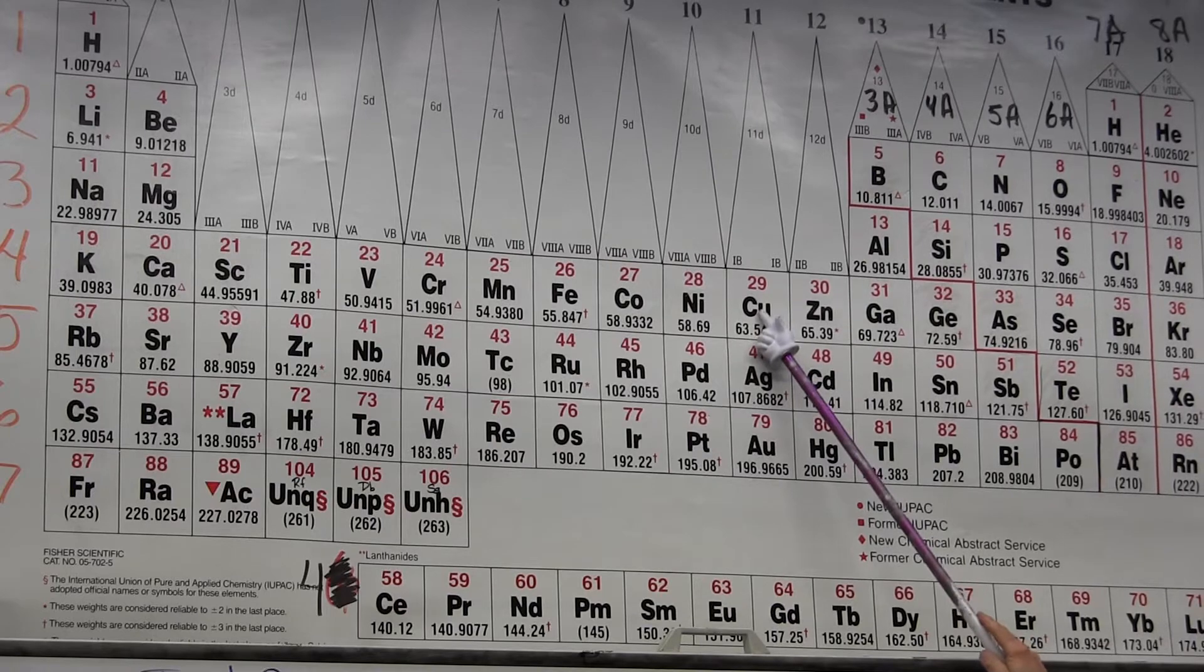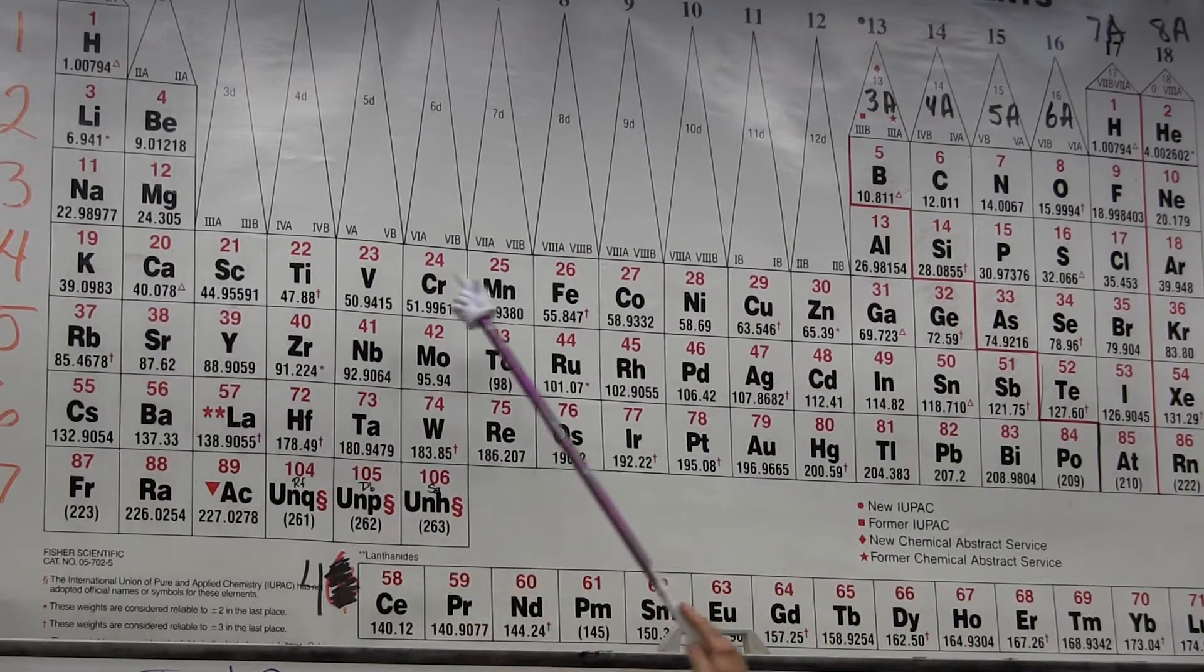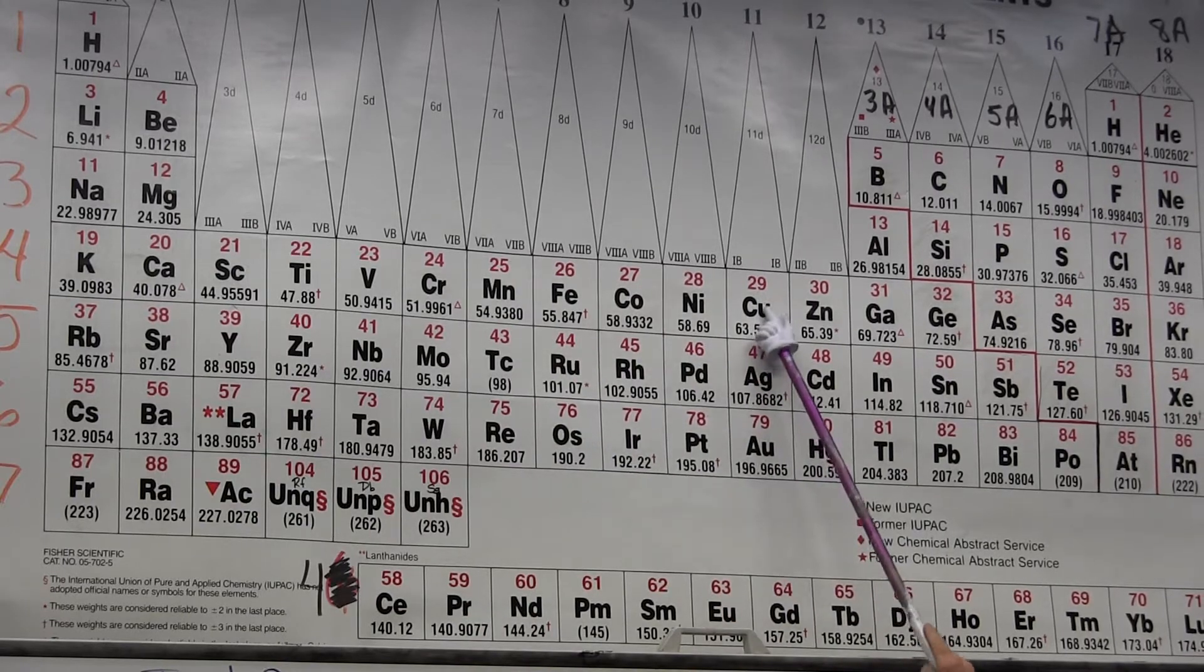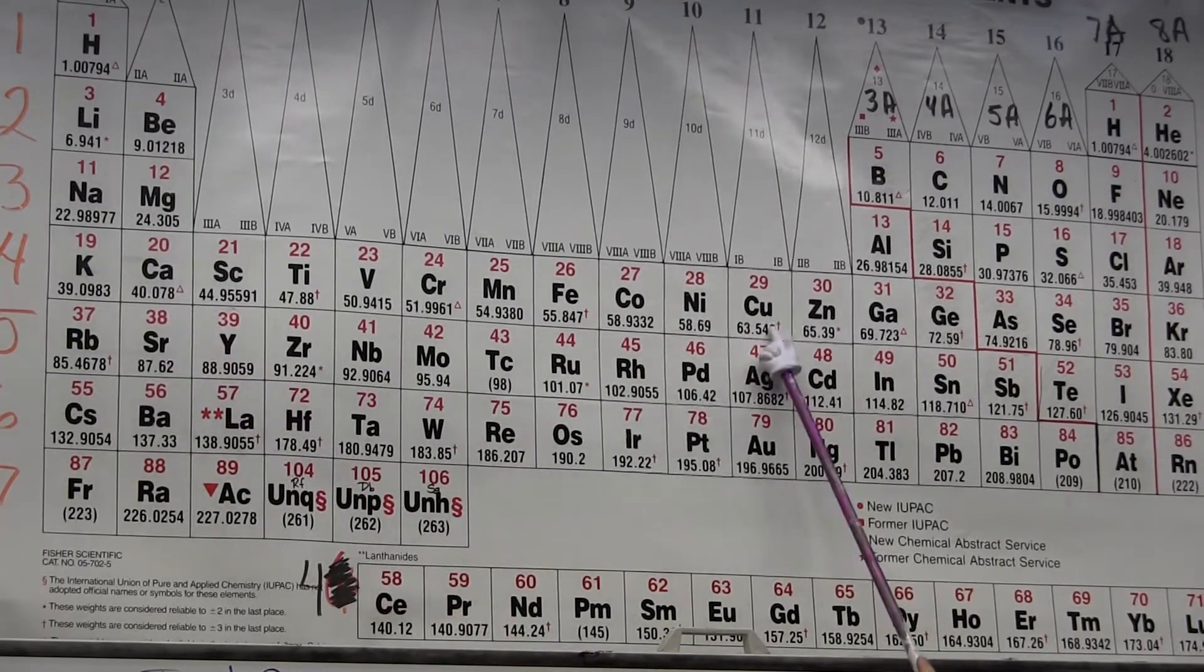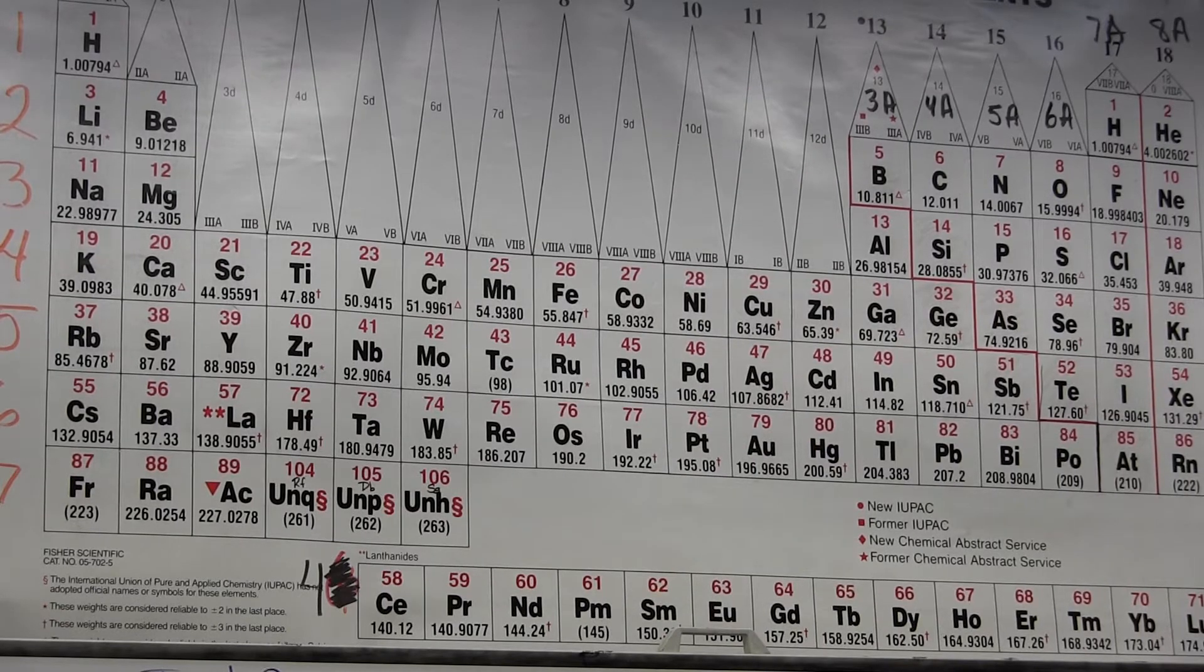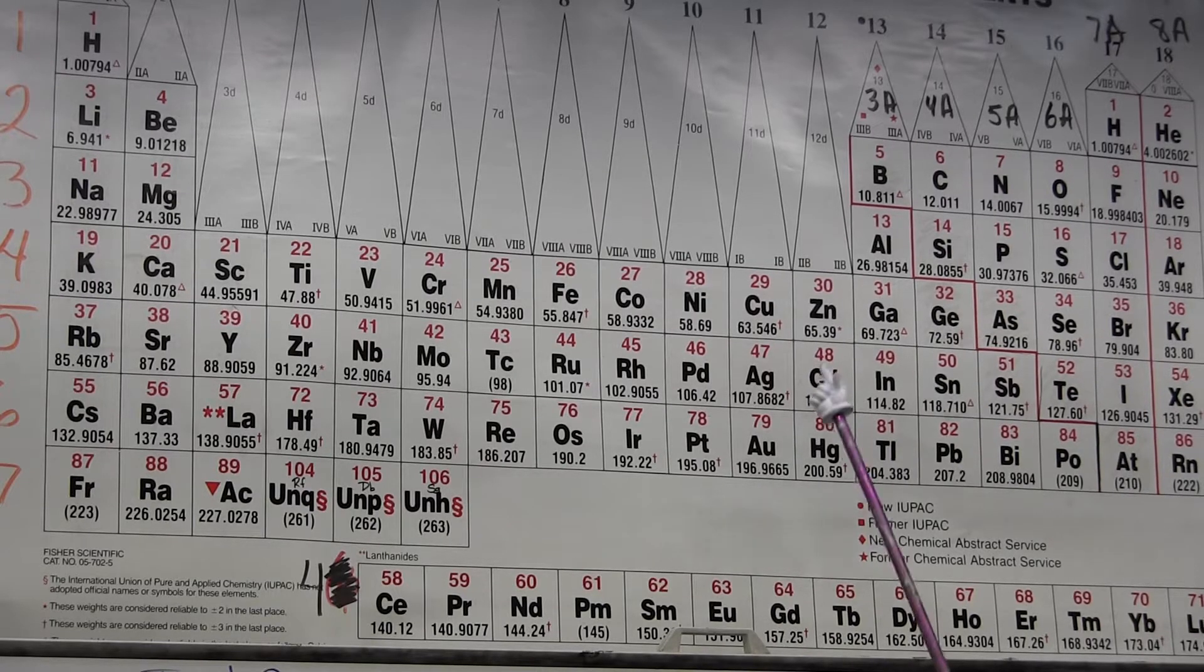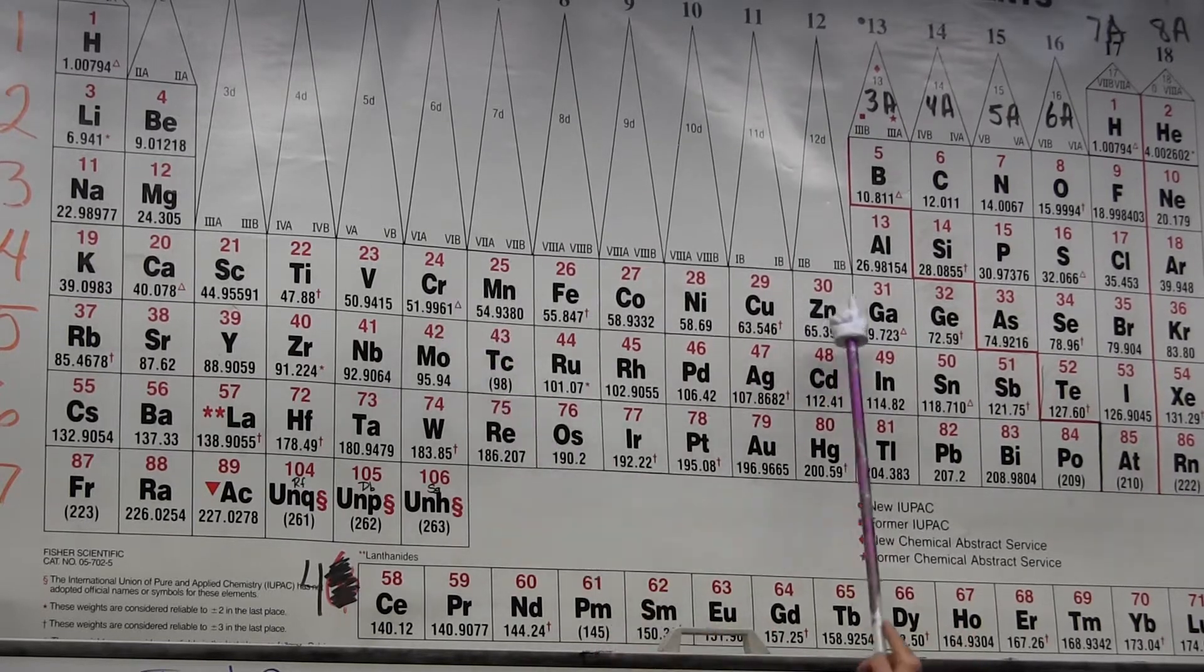With copper, I've got nine d-electrons. Instead of being 4s2 3d9, it's 4s1 3d10. That gives me the filled subshell for the d electrons, which has zero orbital angular momentum and is particularly stable.